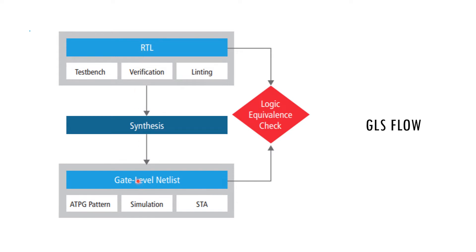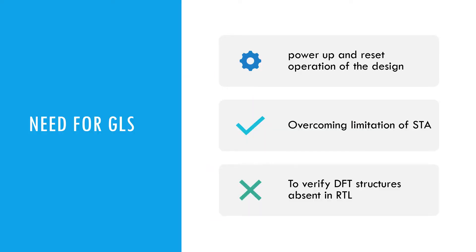Let us try to understand some of the points. The power up and reset operation of a design — how you power up your chip and how the chip comes out of a reset can only be checked in a gate level simulation. Your RTL simulation can basically check the functionality, but the timing can only be checked at a gate level simulation.